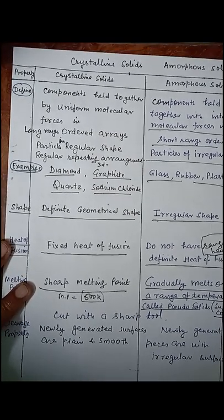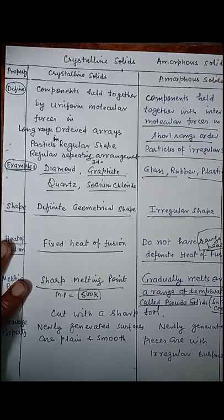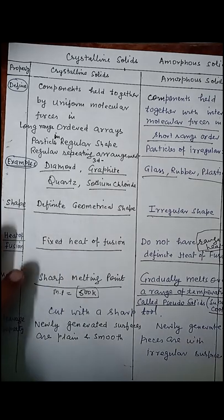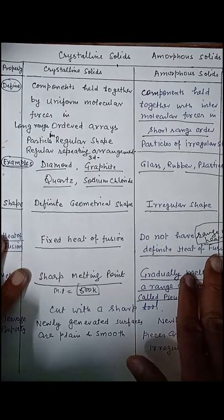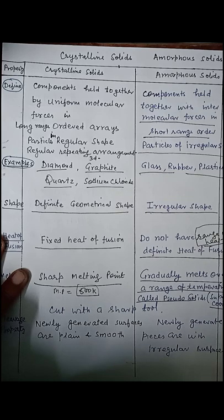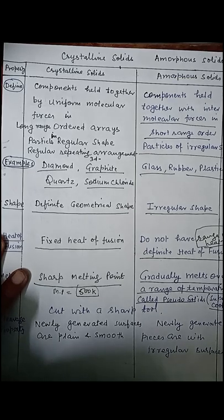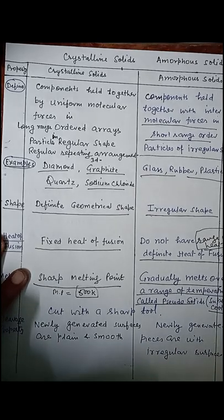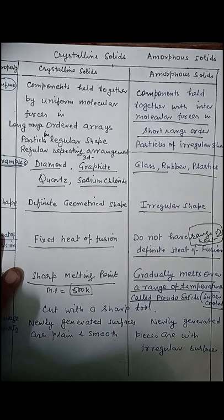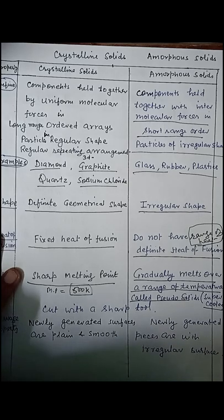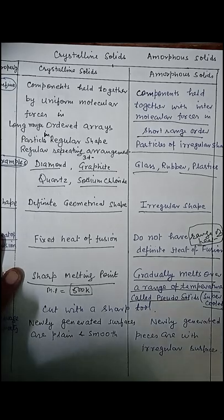The definition of crystalline solids states that its constituent particles — they may be atoms, they may be molecules — are held together by uniform molecular forces so as to make a long range ordered array. That is, particles are in a regular shape and the solid has a regular, repeating three-dimensional arrangement of constituent particles. In amorphous solids, the constituent particles are held together with intermolecular forces so as to make a short range order, meaning the order is not repeating. Particles are of irregular shape and amorphous solids are also in irregular shape.